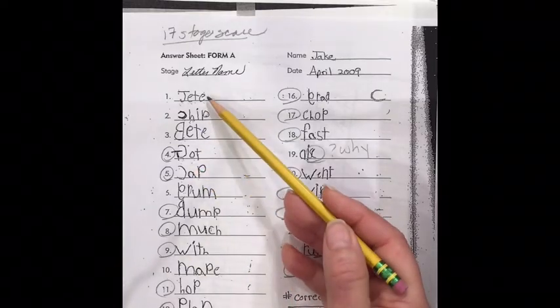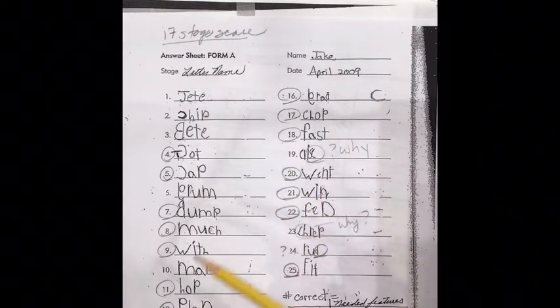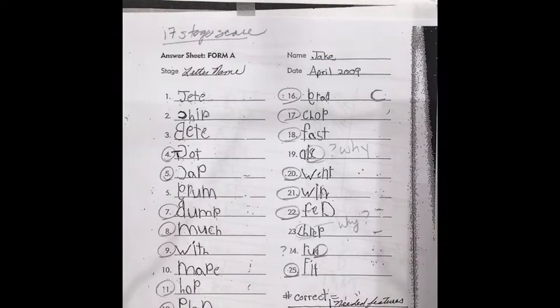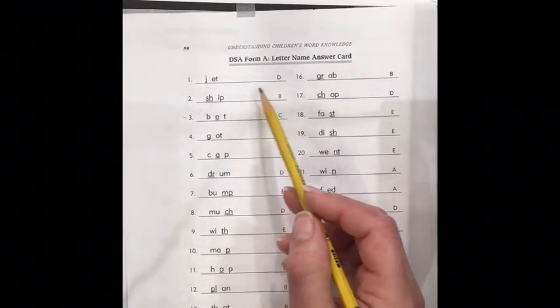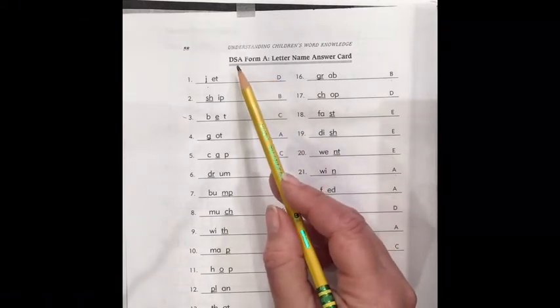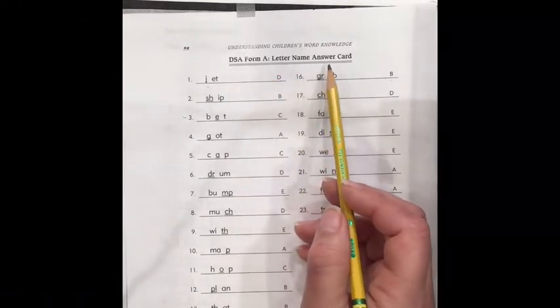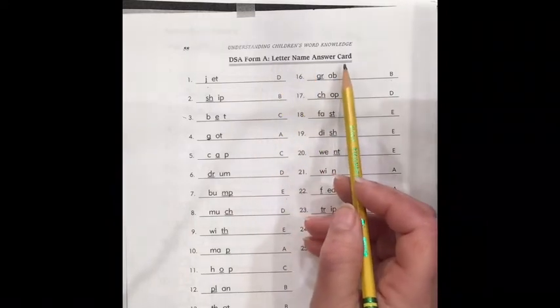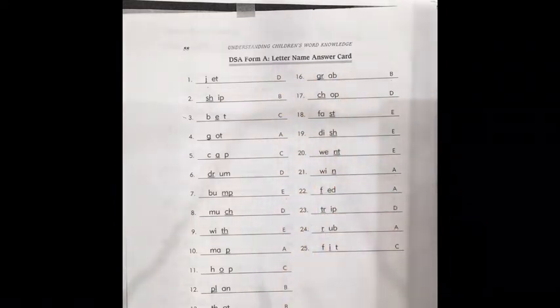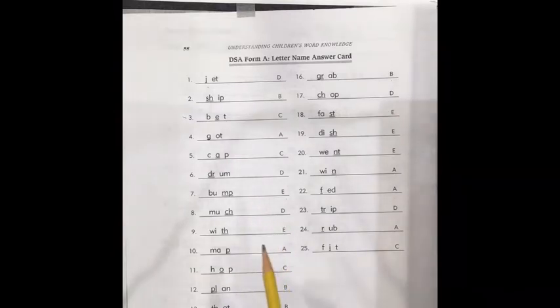So what Gansk is going to do is she's going to give us a way of looking at what the child has given us to determine if they're showing us some important features. So in your test form packet, you have a form that looks like this. DSA form A letter name answer card. Go find that. And once you've found this form, unpause the video. So pause now, find the form.